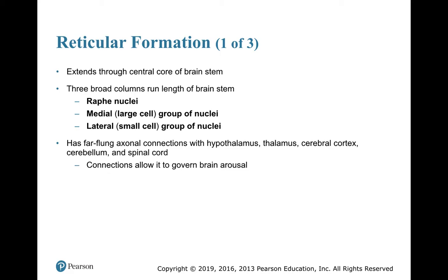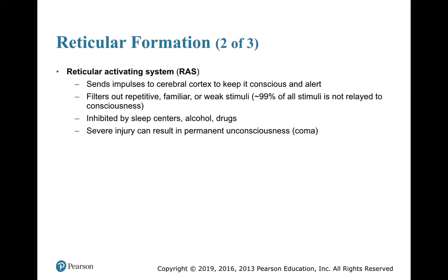It has axonal projections throughout the hypothalamus, the cerebral cortex, the cerebellum, and the spinal cord. All of those connections allow it to govern the arousal state of the brain. It involves the reticular activating system, which sends impulses to the cerebral cortex to keep it conscious and alert. It helps to filter out repetitive, familiar, or weak stimuli.